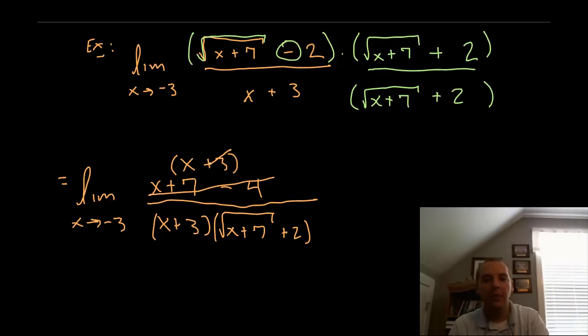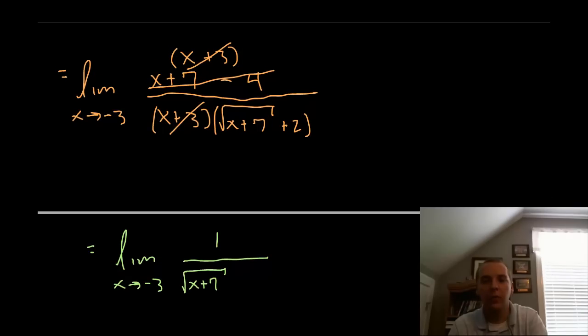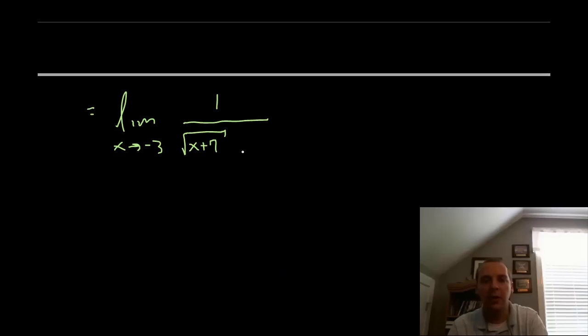I'll write this out again just for your notes. This will be the limit as x approaches negative 3 of 1 over the square root of x plus 7 plus 2.